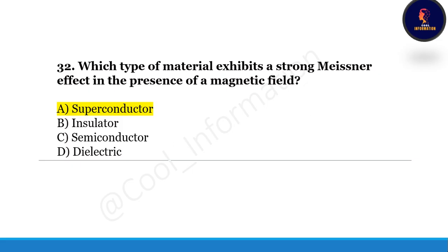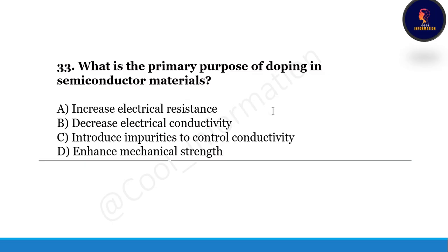Next question: what is the primary purpose of doping in semiconductor materials — option A: increase electrical resistance, option B: decrease electrical conductivity, option C: introduce impurities to control conductivity, option D: enhance mechanical strength? Correct option is C, introduce impurities to control conductivity is the primary purpose of doping in semiconductor materials.